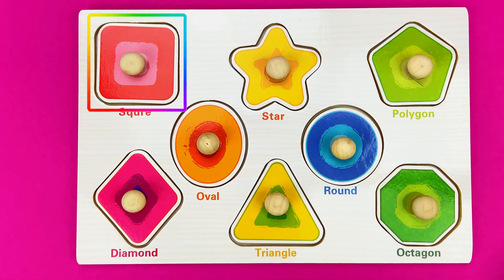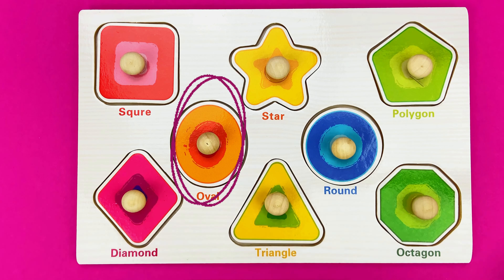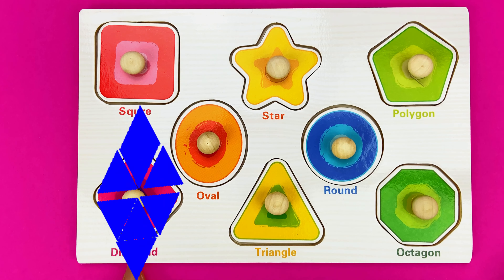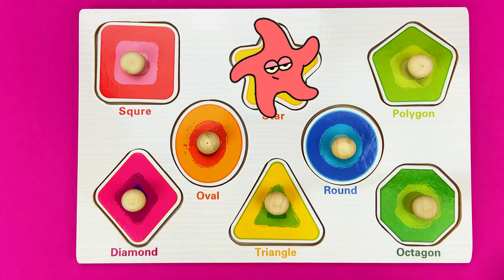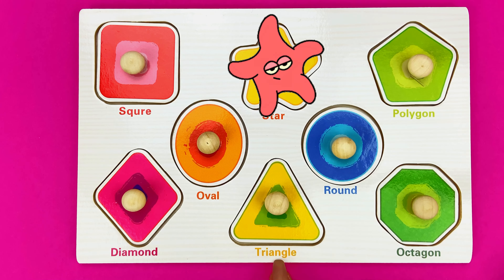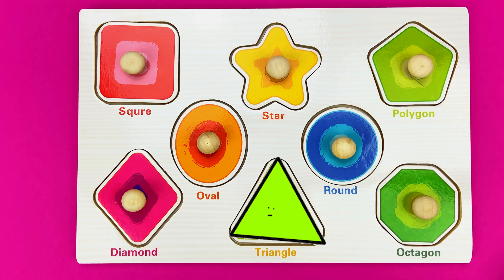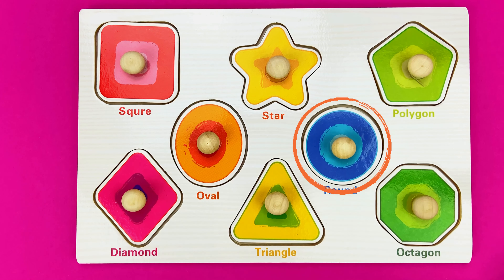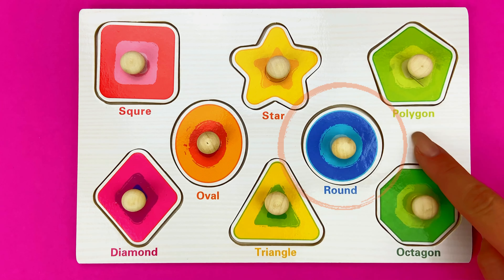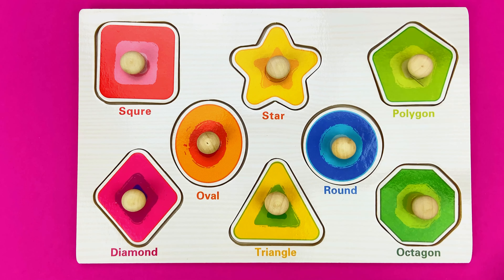Look, it's a square. And this is an oval. This is a diamond. And this is a star. It's a triangle, and it is a round. Look, this is a polygon. And finally an octagon.